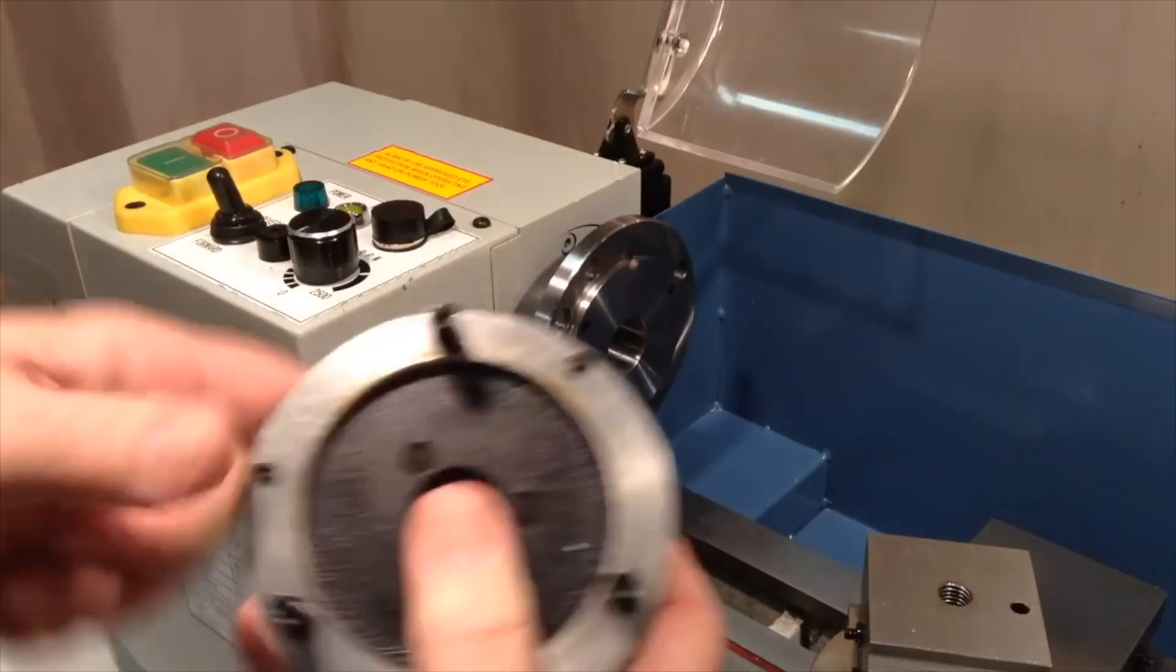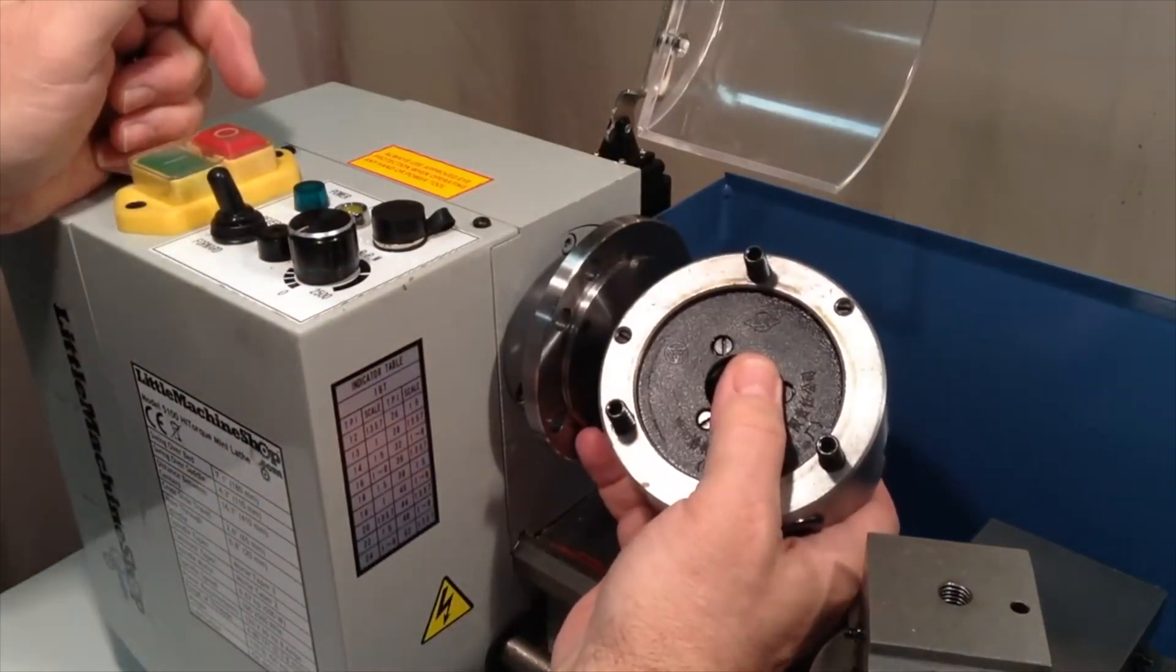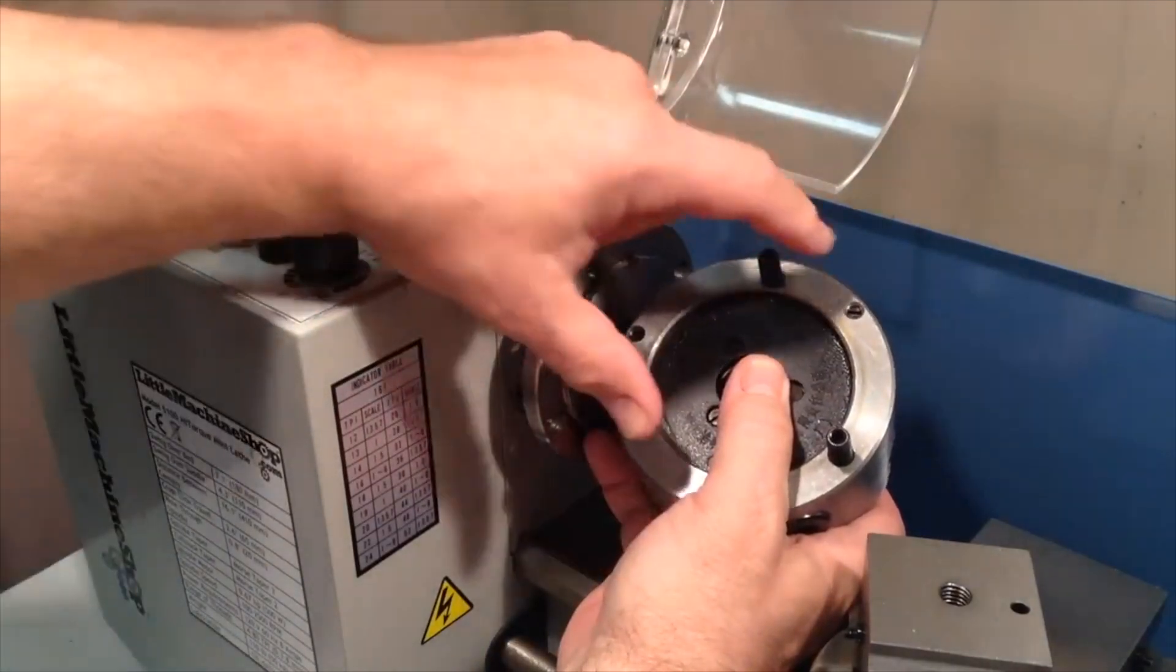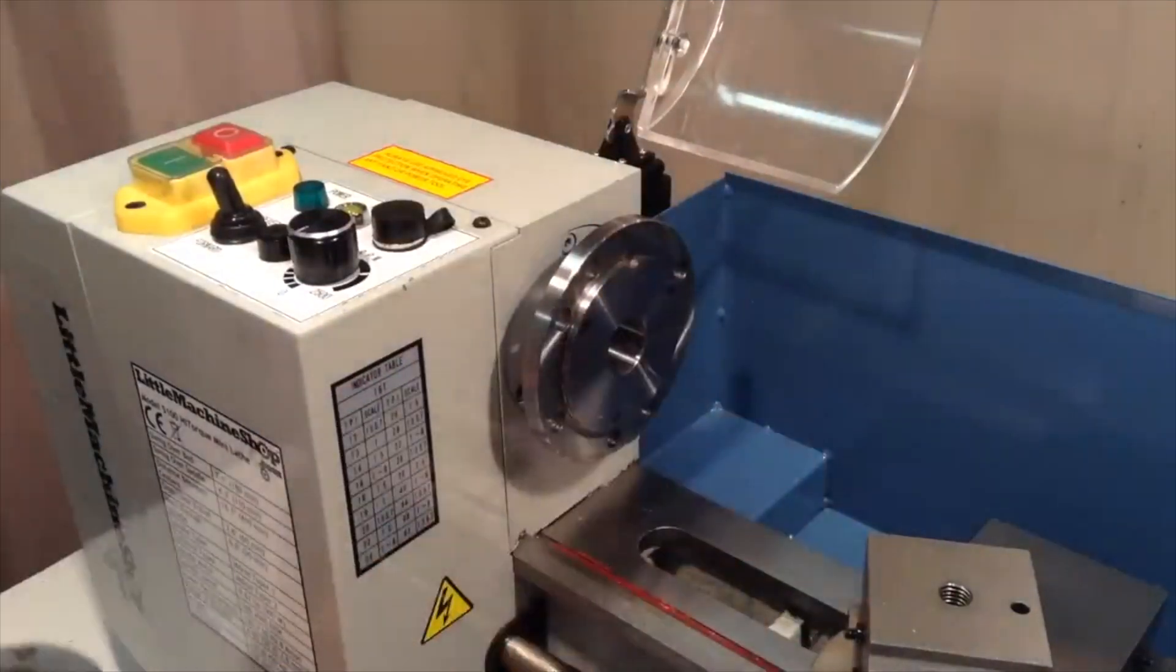On all the other mini lathes, if you want to use a chuck larger than 3 inch diameter, you have to have an adapter plate between the chuck and the spindle to match the larger diameter of the chuck to the smaller diameter of the spindle. But if we take the 3 inch 4 jaw chuck as you would typically use or might use on a mini lathe, this one as you can see doesn't fit any of the holes.